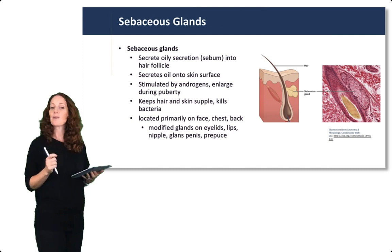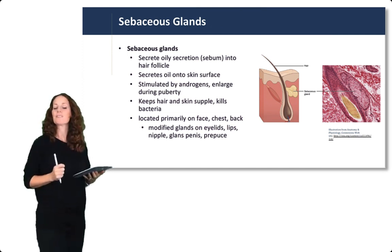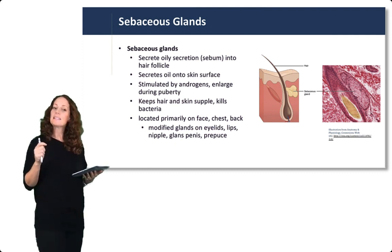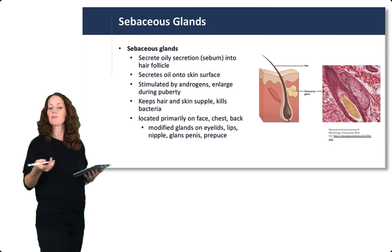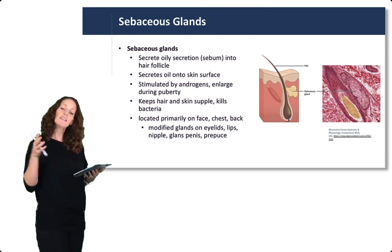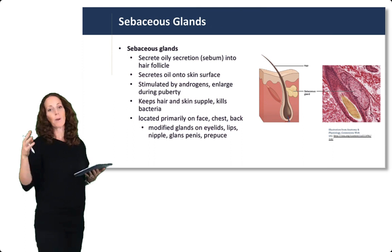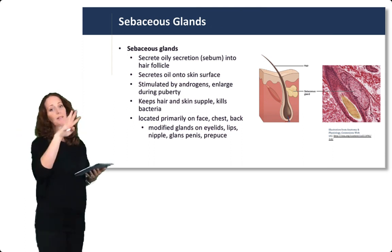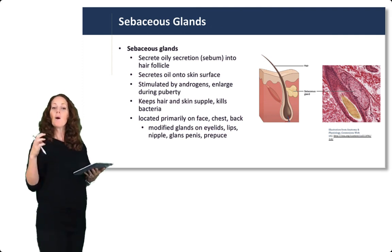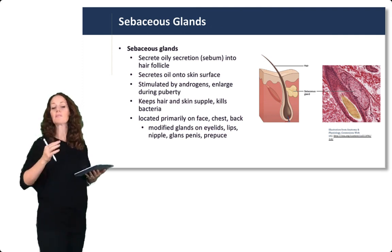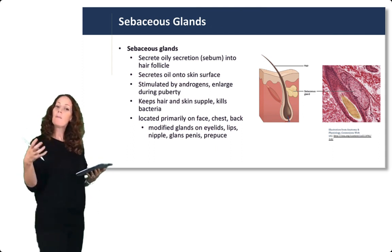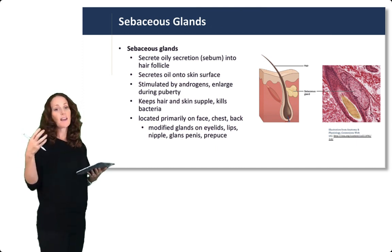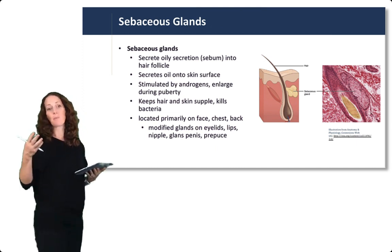The two glands found within the skin are sebaceous and sudoriferous glands. Let's start with sebaceous glands. Sebaceous glands secrete sebum, an oily secretion that is secreted onto the hair follicle to keep the hair moist, and that oil also ends up on the skin surface to help lubricate it. Oil or sebum secretion is stimulated by androgens — remember this when we talk about conditions that affect the sebaceous glands, for example acne.